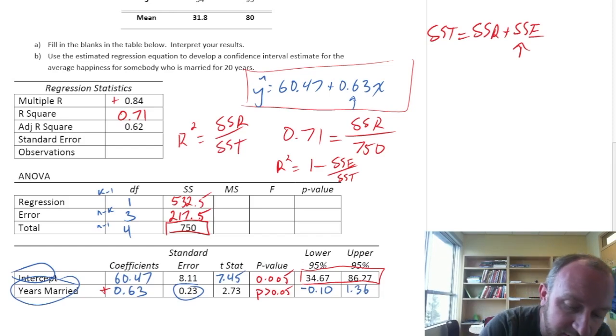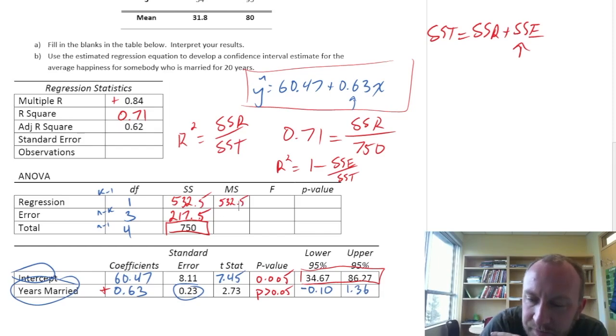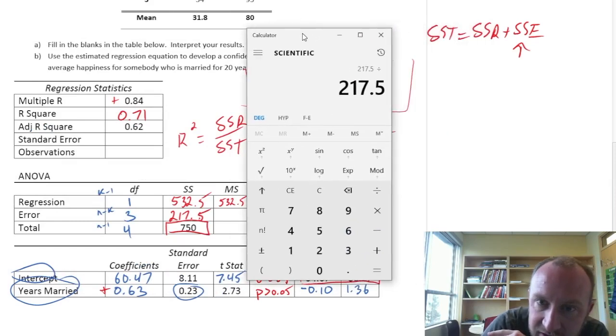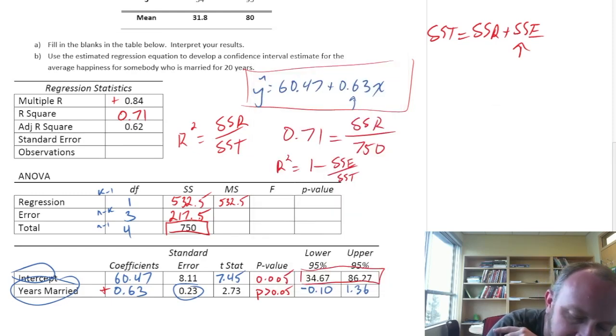So our mean square, this is 532 divided by 1. This is going to be 532.5. MSE, this is going to be 217.5 divided by its degrees of freedom, which in an earlier video we've identified as being 3. So this divided by 3, 72.5.